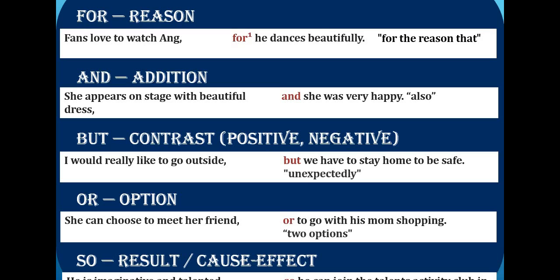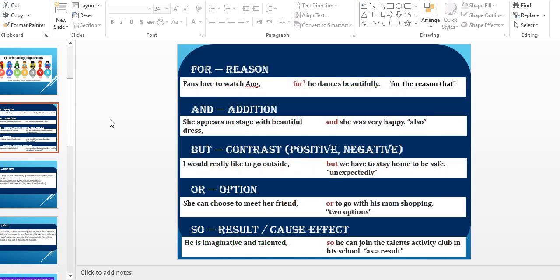SO is used as cause and effect — it shows the result. Example: 'He is imaginative and talented, so he can join the talent activity club in his school.' SO gives me the result of something. Another example: 'It was raining heavily outside, so I had to take my umbrella.' What is the result of the rain? I had to take my umbrella. SO shows the result, like cause and effect.